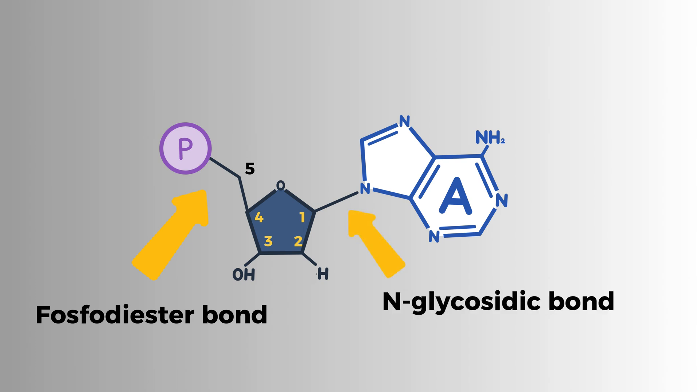And then there's carbon number 3, which is super important. During DNA replication, the next nucleotide is attached exactly at this position, allowing DNA to grow and copy itself accurately.